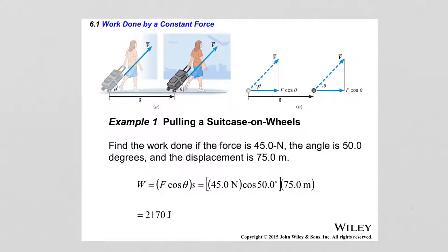Let's assign values to the luggage-pulling example. The force applied is 45 newtons, the angle theta is 50 degrees, and the displacement S is 75 meters. To calculate the work done by this force, by definition work equals F times S. But we only need the x-component of the force, which is F cosine of theta. So: 45 newtons times cosine of 50 degrees times 75 meters equals 2,170 joules.